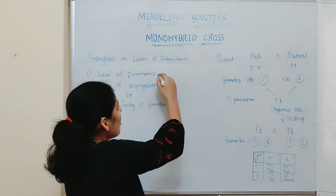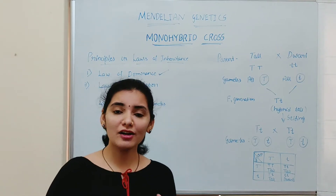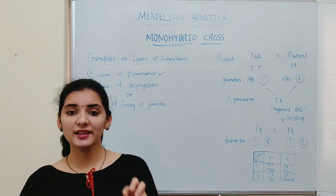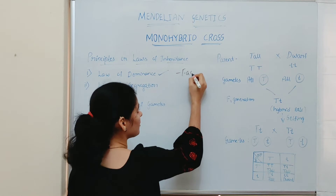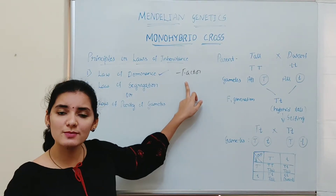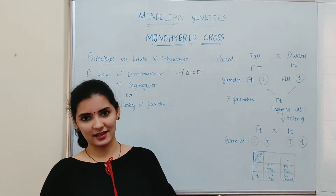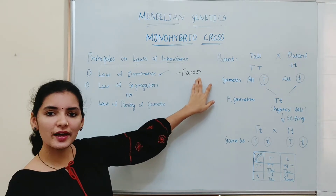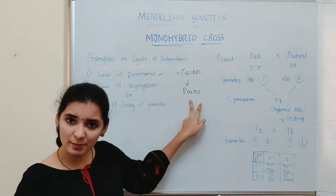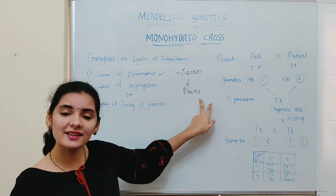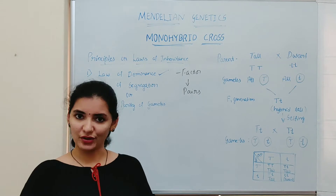First one is the law of dominance. Based on the result that Mendel observed from the monohybrid cross, he concluded that each and every character or trait is controlled by a discrete unit known as a factor. This factor is the one which is responsible for each and every character. Now we are calling this factor as a gene. And according to Mendel, these factors are present in pairs. These paired discrete units known as factors are responsible for each and every character or trait.